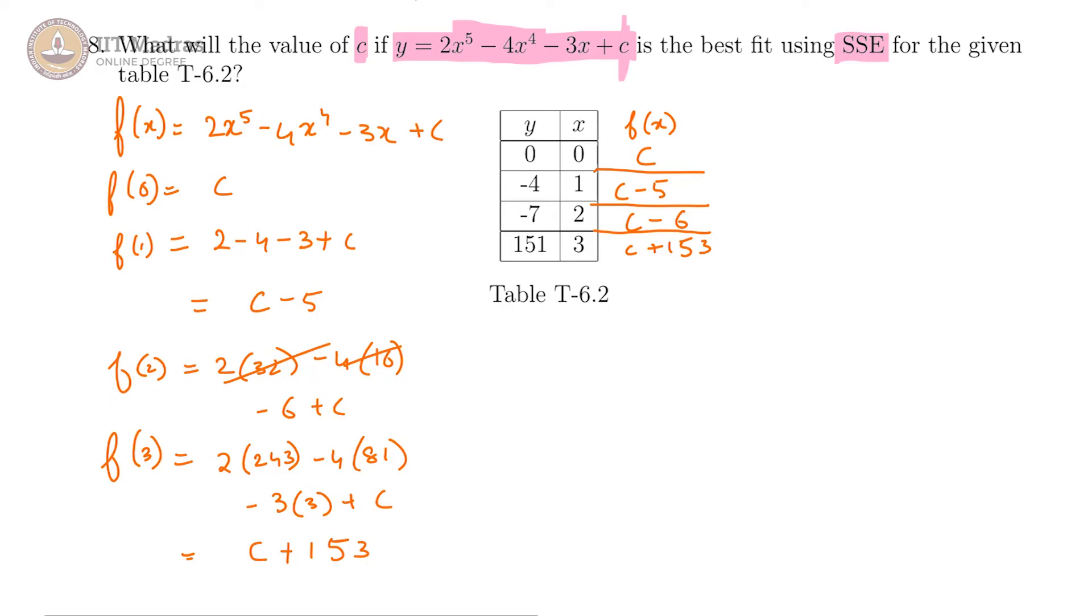For finding SSE we are going to have to do yi minus f of xi the whole square, and we are going to sum it from i equals 1 to 4, and that gives us c minus 0 the whole square plus c minus 5 minus of minus 4, that is c minus 1 the whole square, plus c plus 153 minus 151, so that is c plus 2 the whole square.